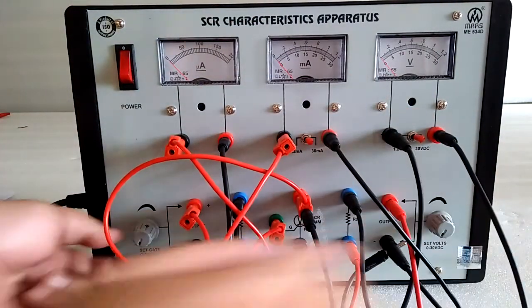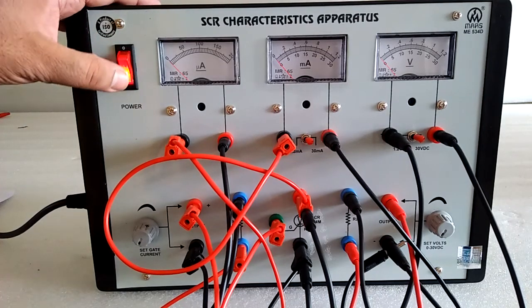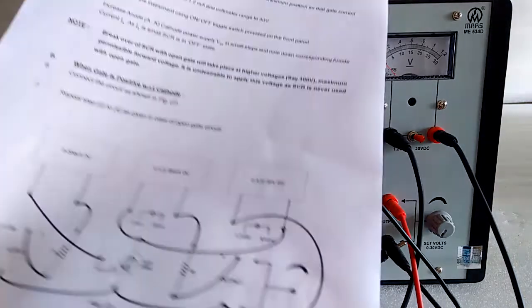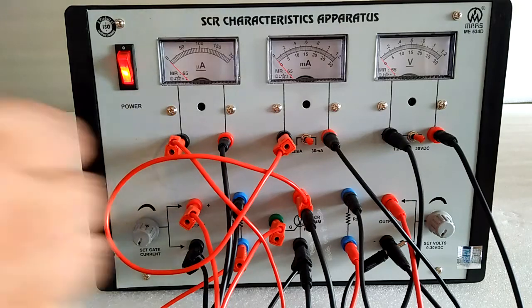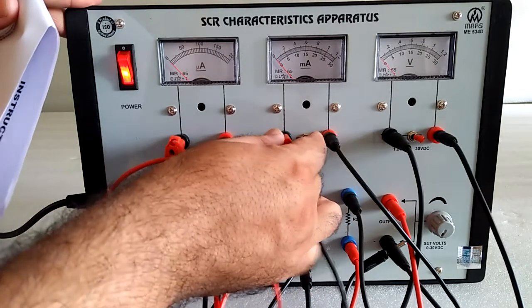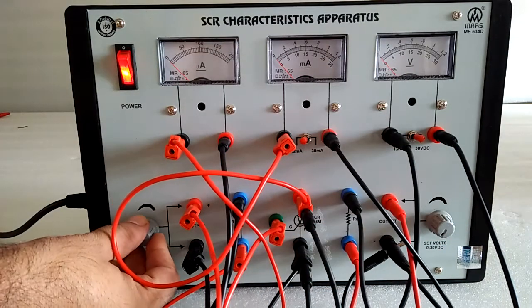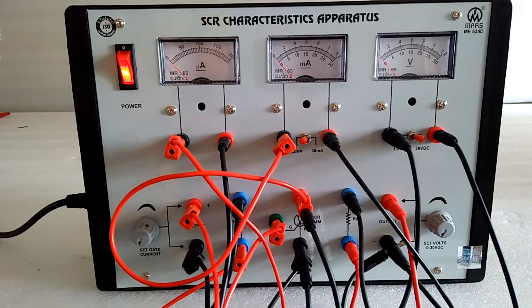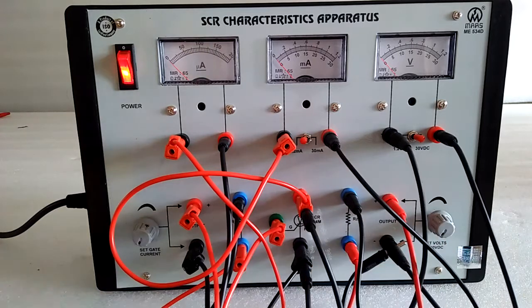Initially put the potentiometer at zero. Switch on the supply. Now follow the procedure. Select 1.2 mA and voltage 30 volt. Gate at minimum when gate is open. Now increase the voltage with the help of this potentiometer.